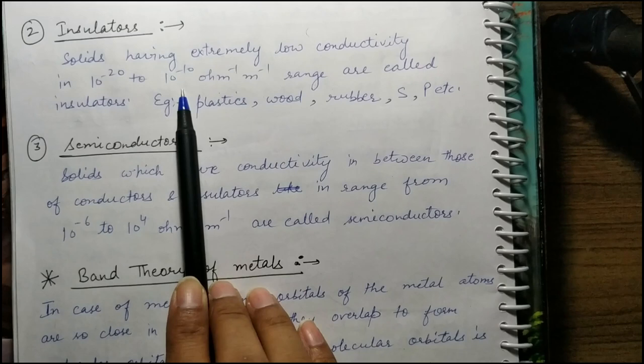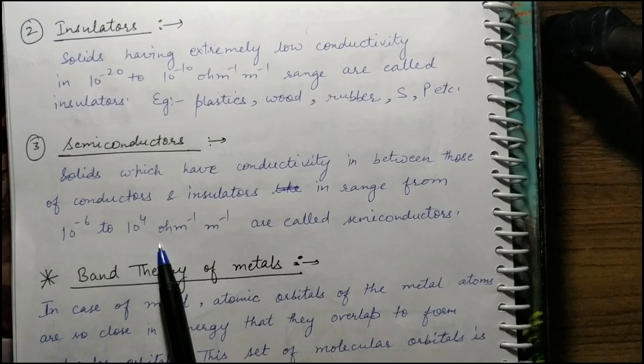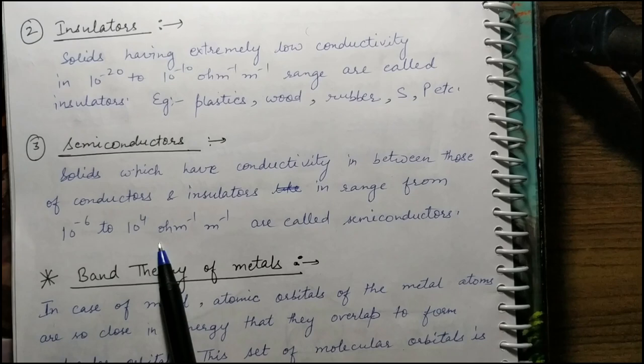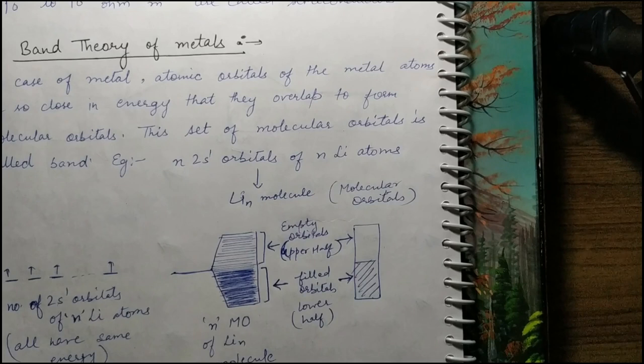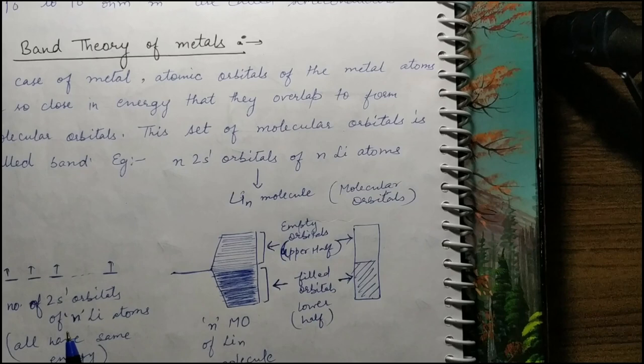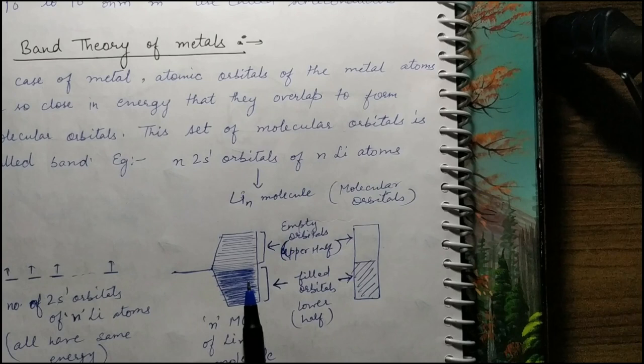Semiconductors have a conductivity range between insulators and conductors: 10⁻⁶ to 10⁴ ohm⁻¹m⁻¹. Then we studied band theory, mainly for metals. Taking lithium as an example: if atomic orbitals combine to form molecular orbitals, the lower half is filled orbitals (valence band) and the upper half is empty orbitals (conduction band). Electrons can jump from filled to empty, making conduction possible.